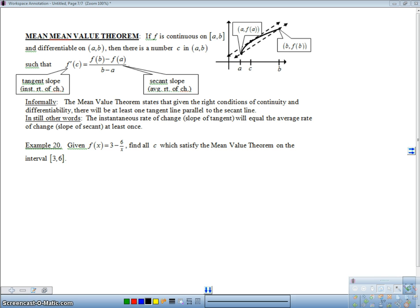The tangent slope, the slope of the tangent line, at some place, some value of C between an interval A and B, somewhere in between here, there's going to be a place where the slope of the tangent line is equal to the slope of the secant line, which is the line that goes through those two points at the end. Really not that bad. Let me show you an example of where you would use it.